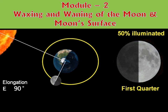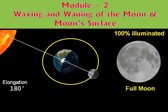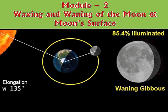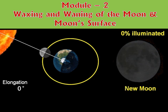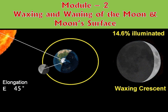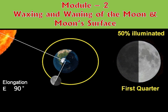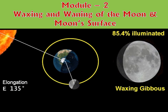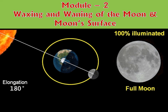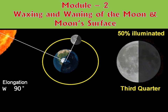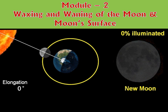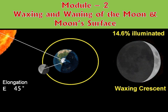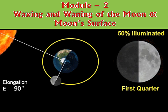Dear children, welcome to the second module of our chapter, Stars and the Solar System. Hope you all are fine and enjoying our classes. In our first module, we mainly discussed the different phases of the moon. Today, we will study the rest of the concepts related to the moon, mainly about waxing and waning of the moon and the moon's surface.